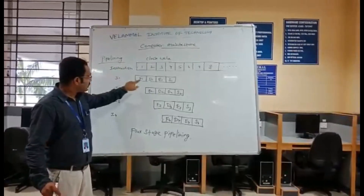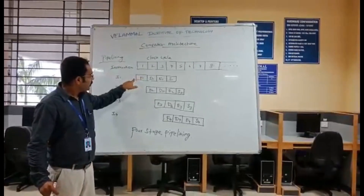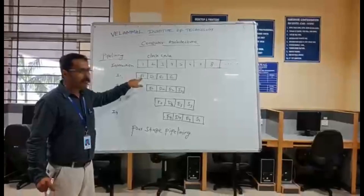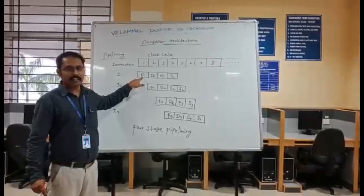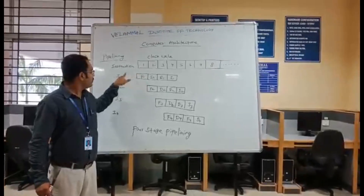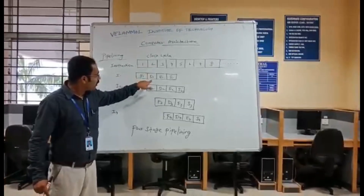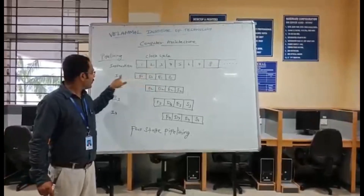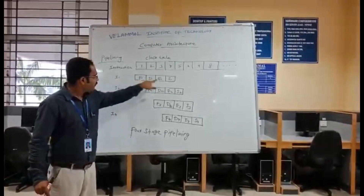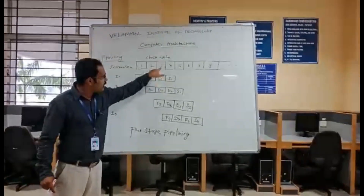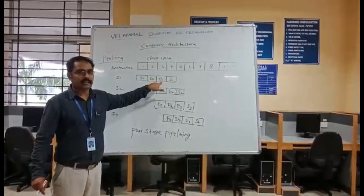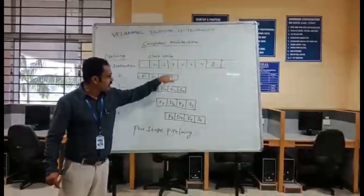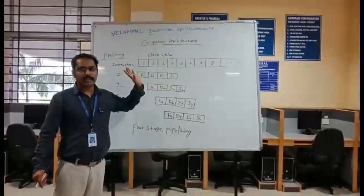For example, Instruction 1 is taking one clock cycle for fetching the instruction, one clock cycle for decoding, one clock cycle for executing, and for storing the result also it is taking one clock cycle.